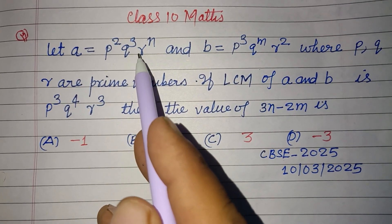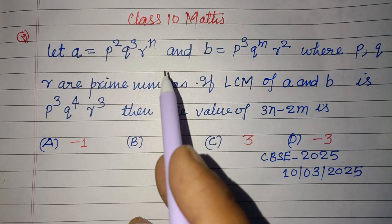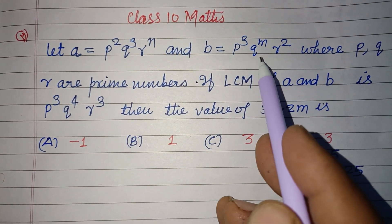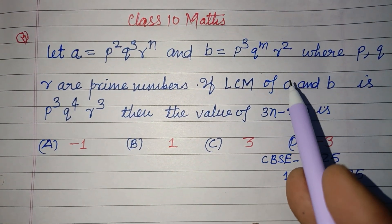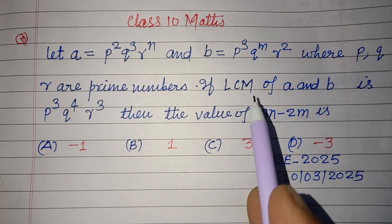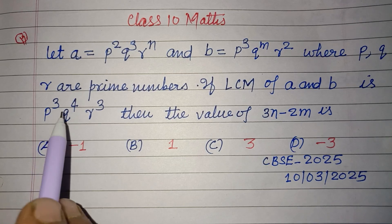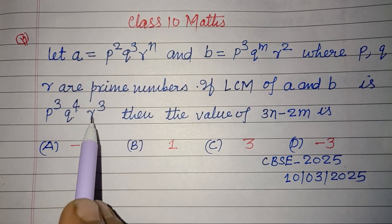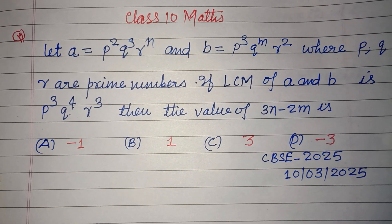Let a equal P squared Q cubed R to the power n, and b equal P cubed Q to the power m R squared, where P, Q, R are prime numbers. If LCM of a and b is P cubed Q to the power 4 R cubed, then the value of 3n minus 2m is.